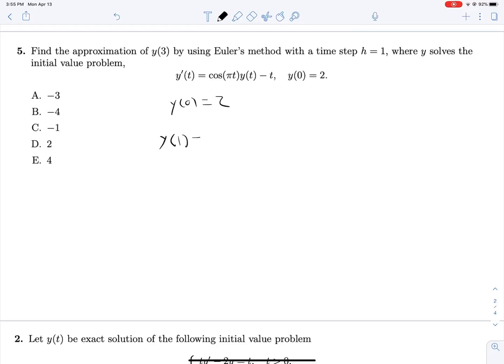so we're approximating y of 1. That's going to be y at 0, so 2, our most recent known condition, plus our h value of 1 multiplied by y prime evaluated at that condition y at 0 is 2. So that's cosine of 0t, so 1 multiplied by y of t, which is 2, minus t, which is 0, so we get 4.